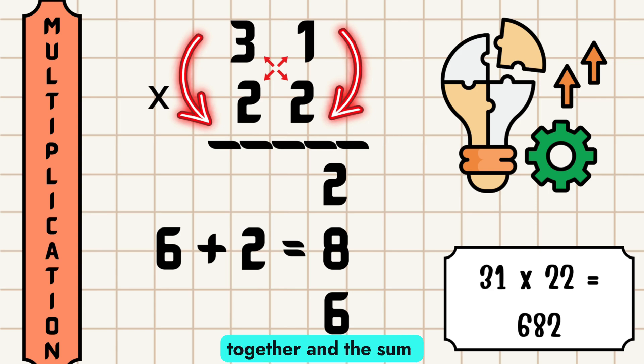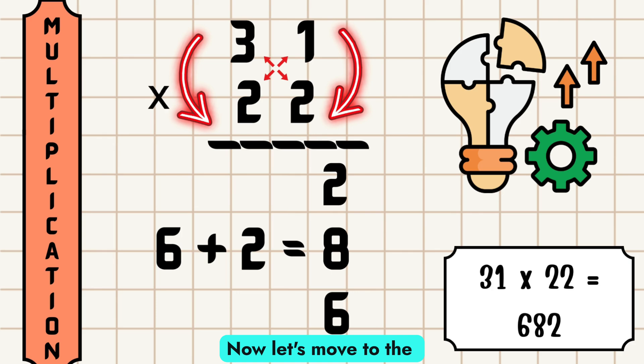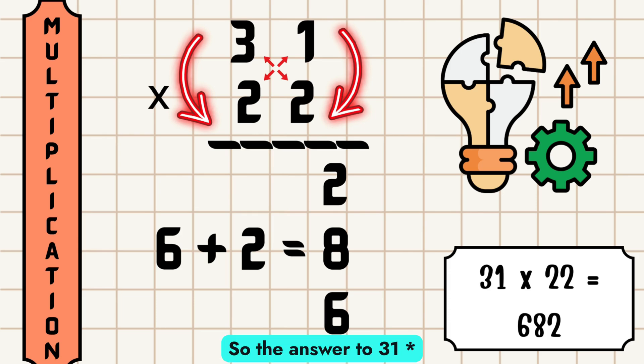Add these two together and the sum is 8. Now let's move to the left column: 3 times 2, which equals 6. So the answer to 31 times 22 is 682.